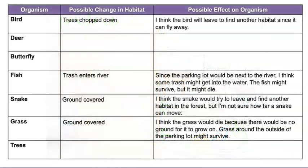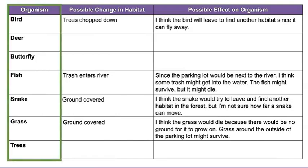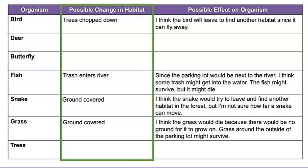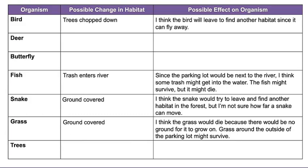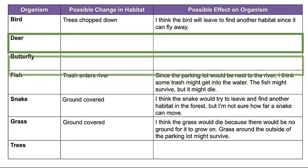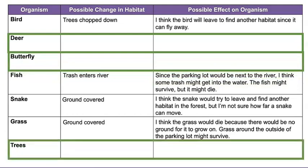Let's put all these ideas in one place. I wrote down all of our thoughts in this handy chart. The chart lists each organism, how that organism's habitat might change if the parking lot were built, and the effect that change might have on the organism. Your task after this lesson will be to finish filling out this chart in your science journal.